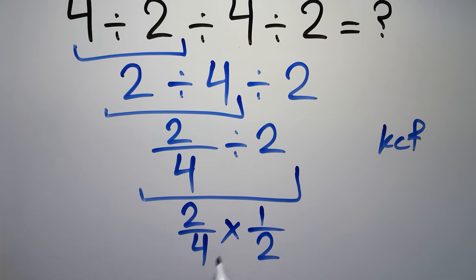So we have 2 over 4 times 1 over 2. We can easily cancel this 2 and this 2, so we have just 1 over 4, or 0.25, and this is our final answer to this problem.